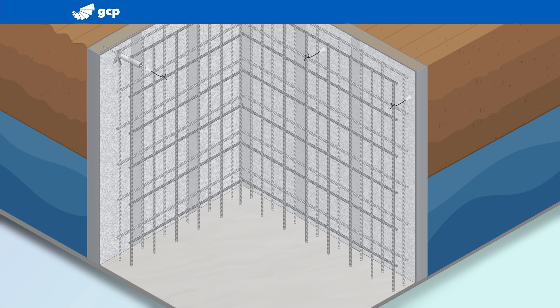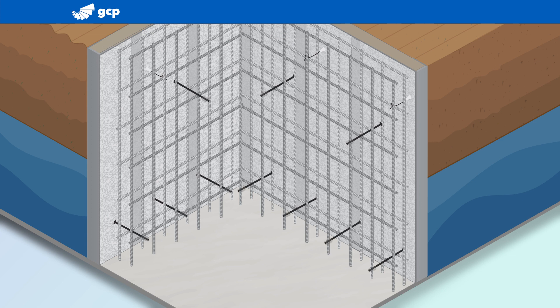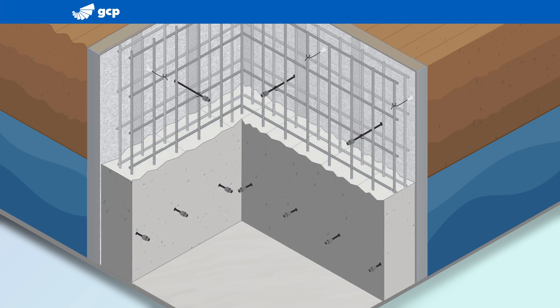PreProof SCS ports are then installed and tied to the rebar cage. When the Shotcrete is sprayed, PreProof SCS ports are left fully accessible.